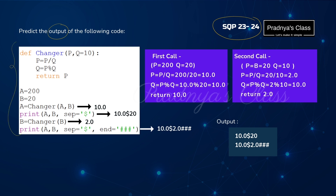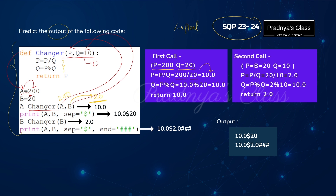Here is the next code — understand it carefully and write the values for each function call. A is initialized to 200, B is initialized to 20. We call the function 'changer', passing A to P and B to Q, so P is 200 and Q is 20. The default value 10 gets overwritten by 20. Now we calculate: P equals P divided by Q, which is 200 divided by 20, giving 10.0 — division gives a float result. Then P equals P modulus Q: 10.0 modulus 20 gives remainder 10.0.